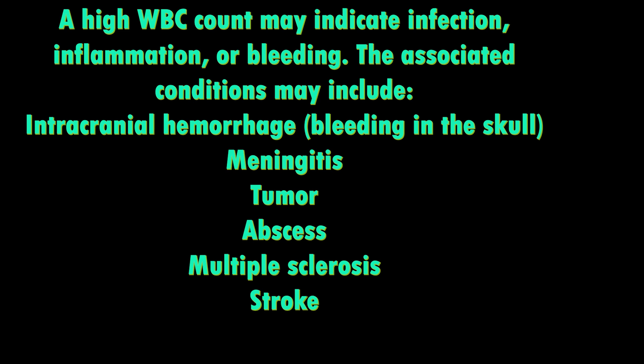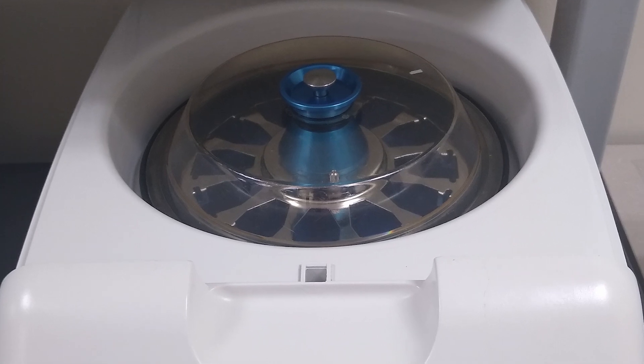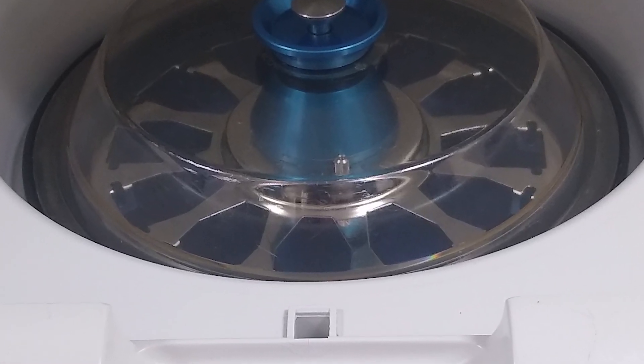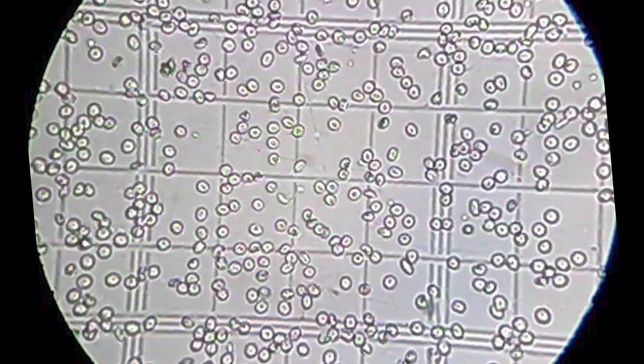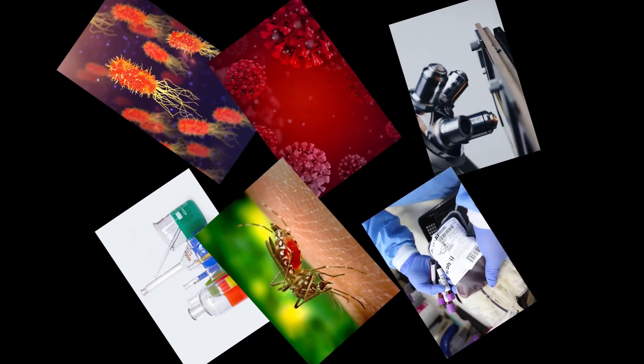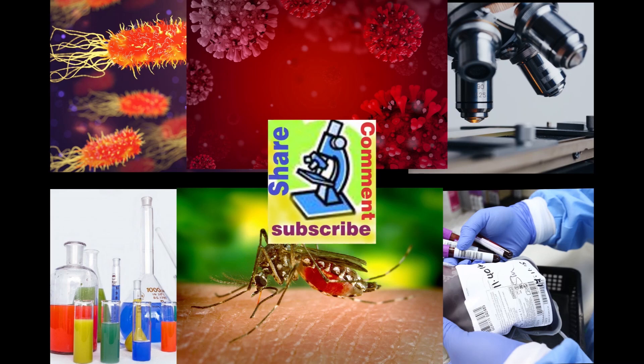Make a smear from the sediment, stain it with any Romanowsky stain, and report the differential count. If a cytospin centrifuge system is available, those smears can be used for low-count samples. While counting, follow the L-rule to avoid duplication: always count cells on the left side and bottom of the line for each square, so the same cell is not counted on both borders.